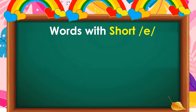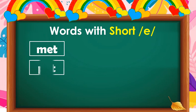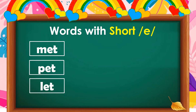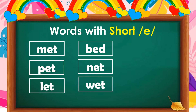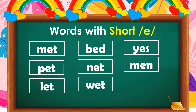Next, words with short E or the E sound: met, pet, let, bed, net, wet, yes, men, pen.